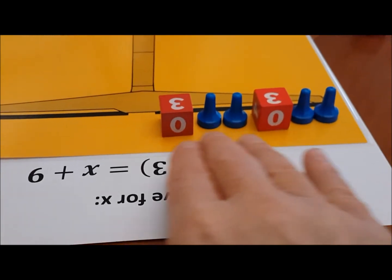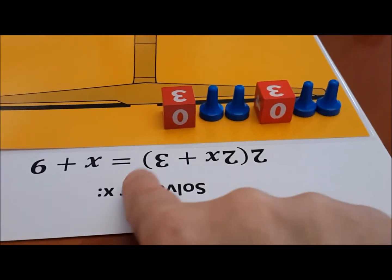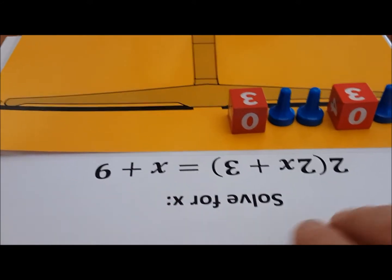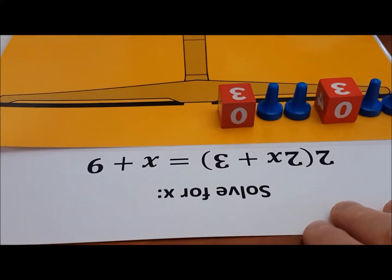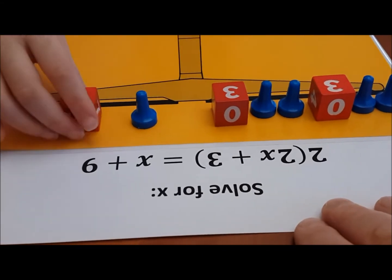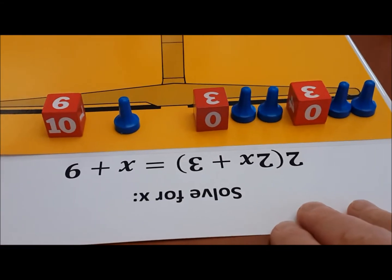Okay, so now we have one side of the equation. We have 2x plus 3 twice. And on the other side we have x plus 9. Please set up an x plus 9 on the other side. Wonderful, wonderful.